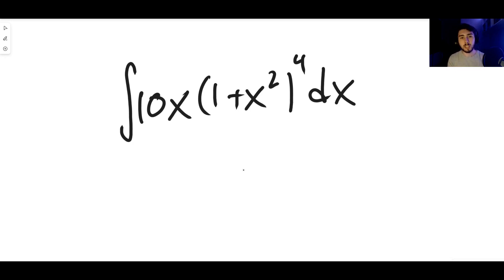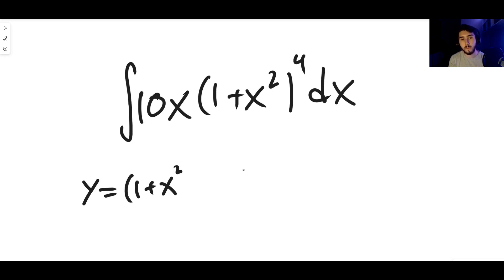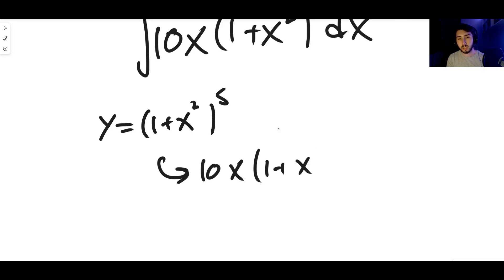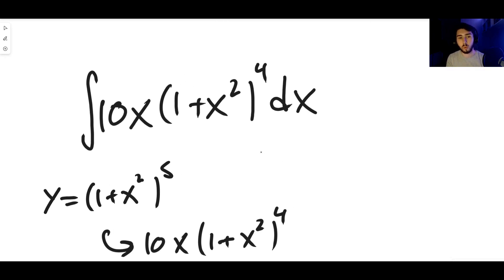Here's what you need to do: consider one power higher than the power you have. If you have 1 plus x squared to the 4, you're going to consider y equals 1 plus x squared to the 5. When you differentiate using the chain rule the power drops, so when you integrate you should expect the power to increase. Use this as a trial - differentiate and see what you get. We already did that: we get 10x times 1 plus x squared to the 4, which means the integral of 10x times 1 plus x squared to the 4 must be 1 plus x squared to the 5 plus c.